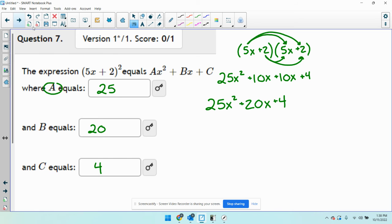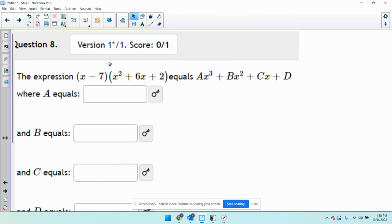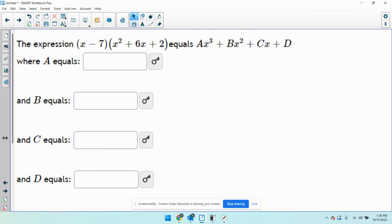Okay. The second example, a little bit more complicated here, is we have a binomial being multiplied by a trinomial. It works the same way. I'm going to multiply the x by each term in the second parenthesis. So I get x times x squared is x cubed, x times 6x is 6x squared, x times 2 is 2x.